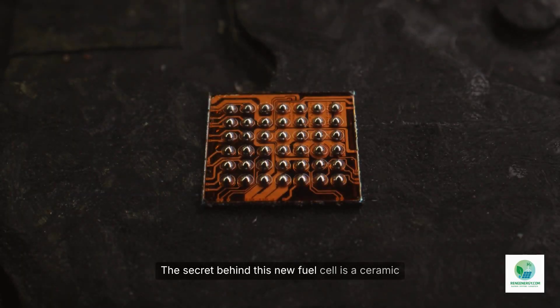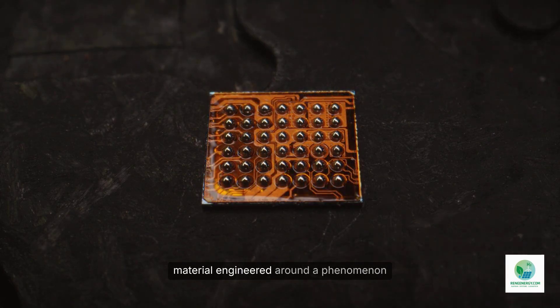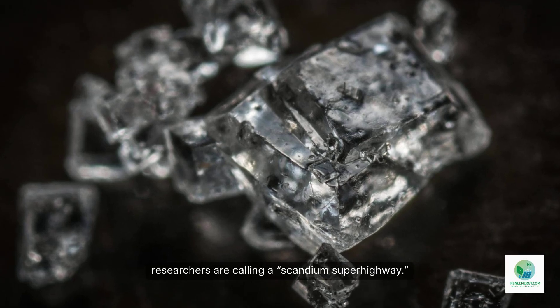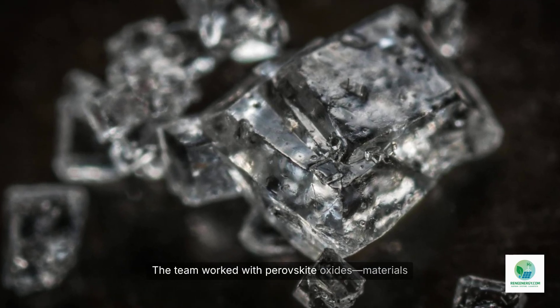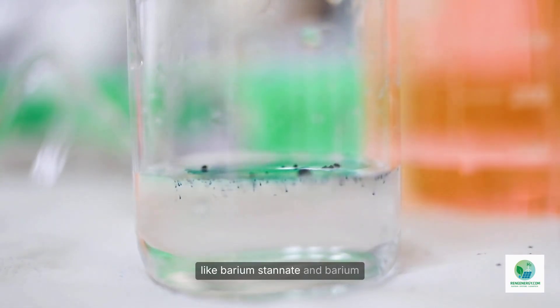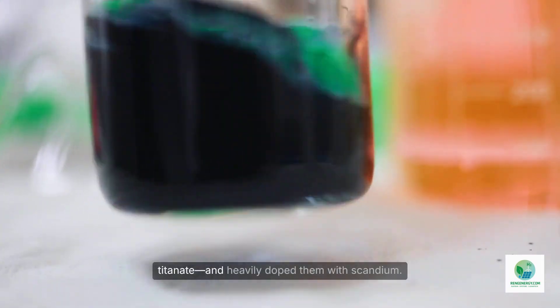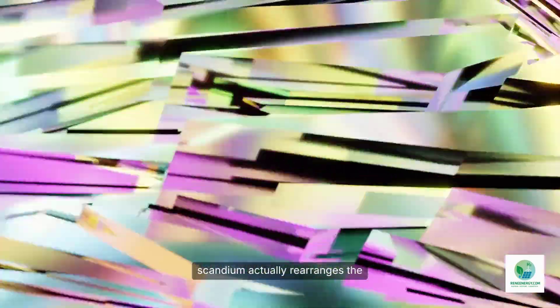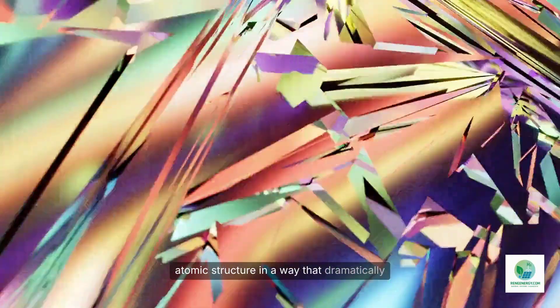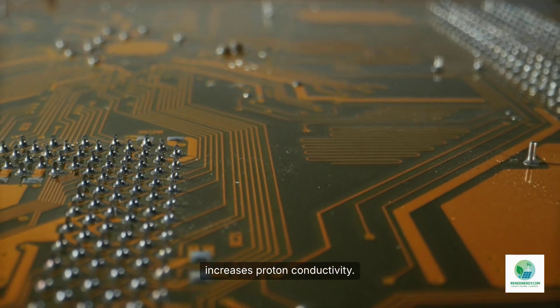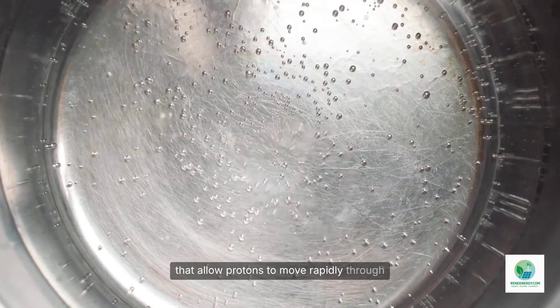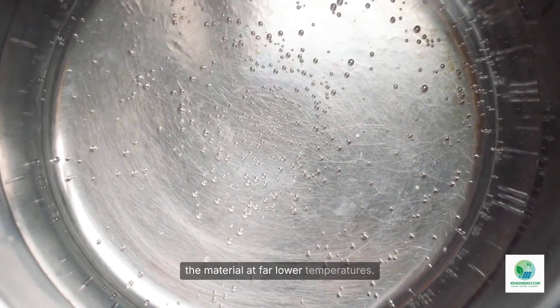The secret behind this new fuel cell is a ceramic material engineered around a phenomenon researchers called a scandium superhighway. The team worked with perovskite oxides, materials like barium stannate and barium titanate, and heavily doped them with scandium. Instead of slowing ionic movement, scandium actually rearranges the atomic structure in a way that dramatically increases proton conductivity. It creates interconnected pathways that allow protons to move rapidly through the material at far lower temperatures.